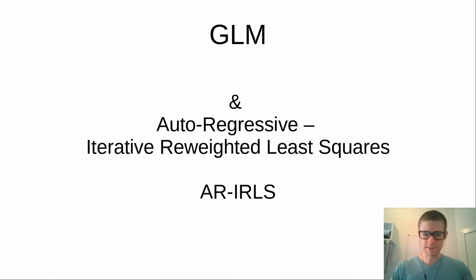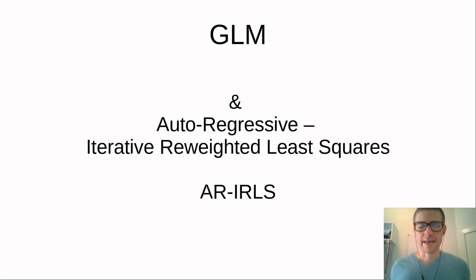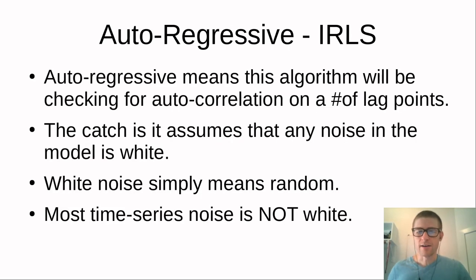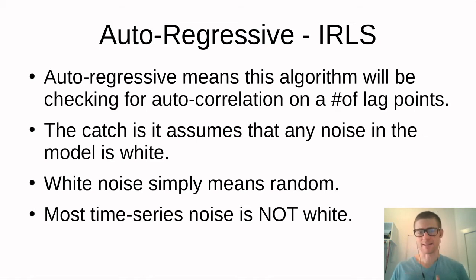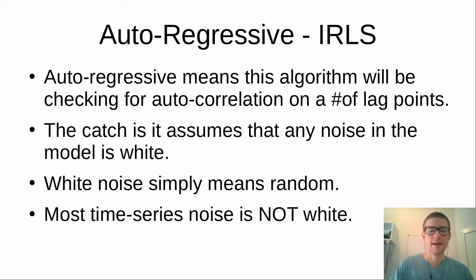The pre-whitening algorithm is built out of the GLM module. It uses a process called Autoregressive Iterative Reweighted Least Squares, also known as ARIRLS. The AR stands for autoregressive, meaning the algorithm checks for autocorrelation at a number of lag points. For example, if you're at time point ten, one lag point is time point nine, two lag points is time point eight, and so on.